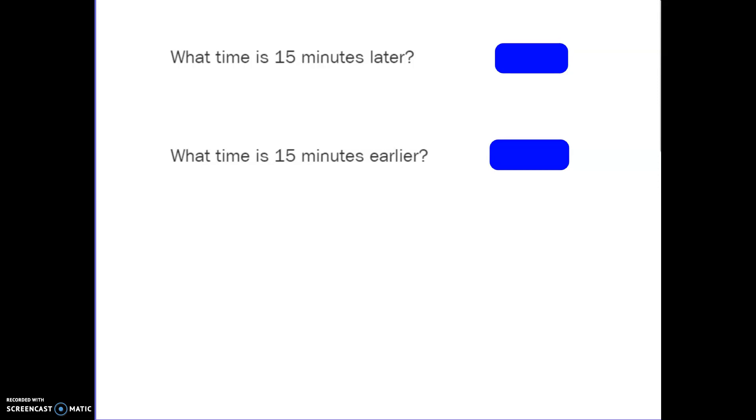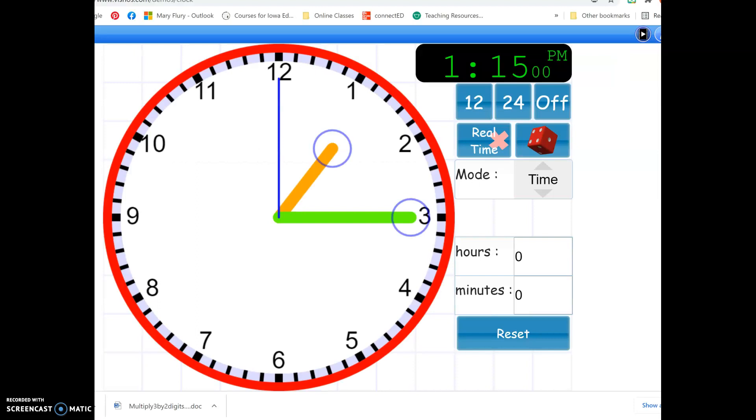What time is 15 minutes later? How do you show that on your clock? The minute hand, the long hand, should be pointing towards the three. Each tick line represents one minute, so if I want 15 minutes later than one o'clock, you're going to point your minute hand to the 15th tick mark, which is also in the same direction as the three. What time is that? It is 1:15.